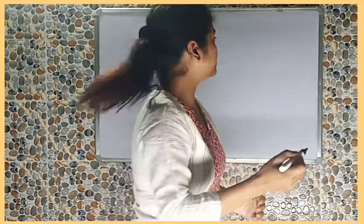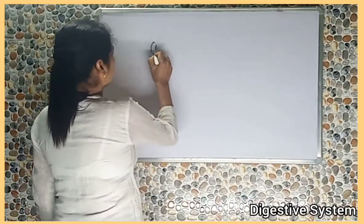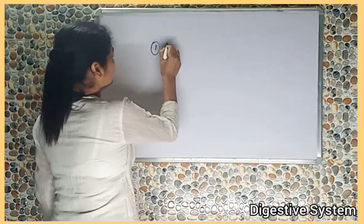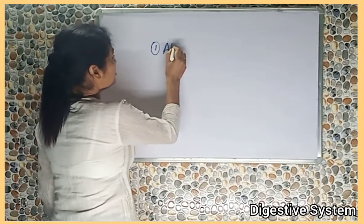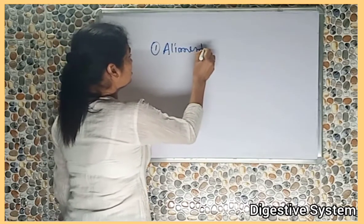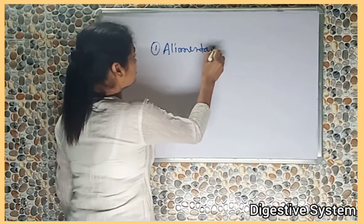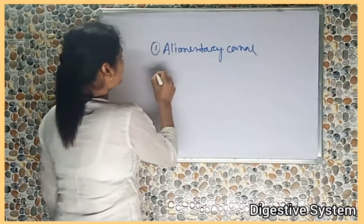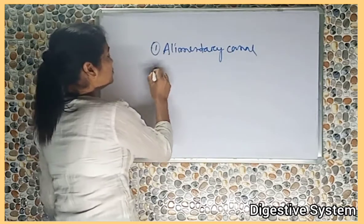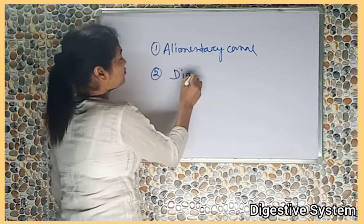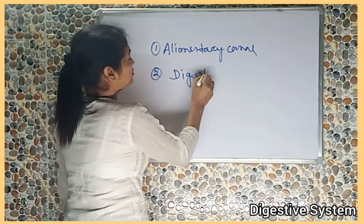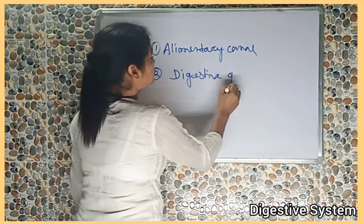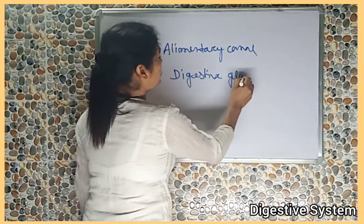The digestive system is mainly divisible into number 1, the alimentary canal, and number 2, the digestive glands.